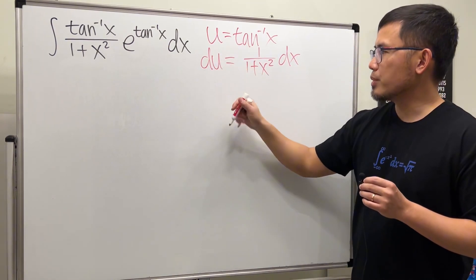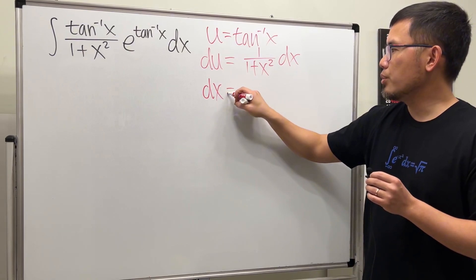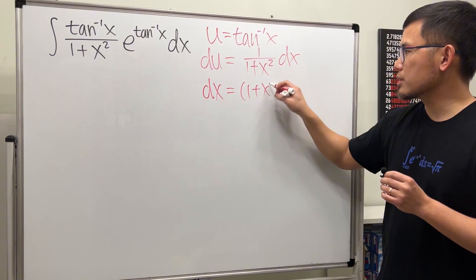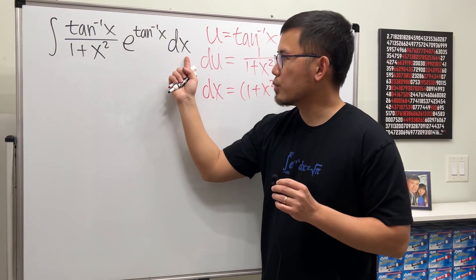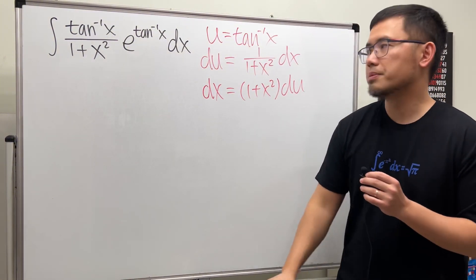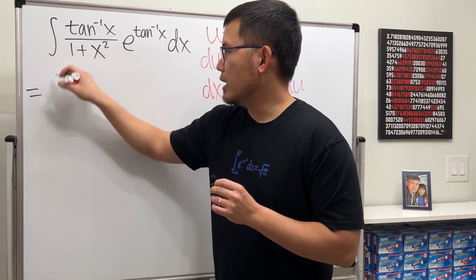If you like, you can isolate the dx. I'll do that for you guys. Multiply this on both sides, we get dx equal to 1 plus x squared times du.